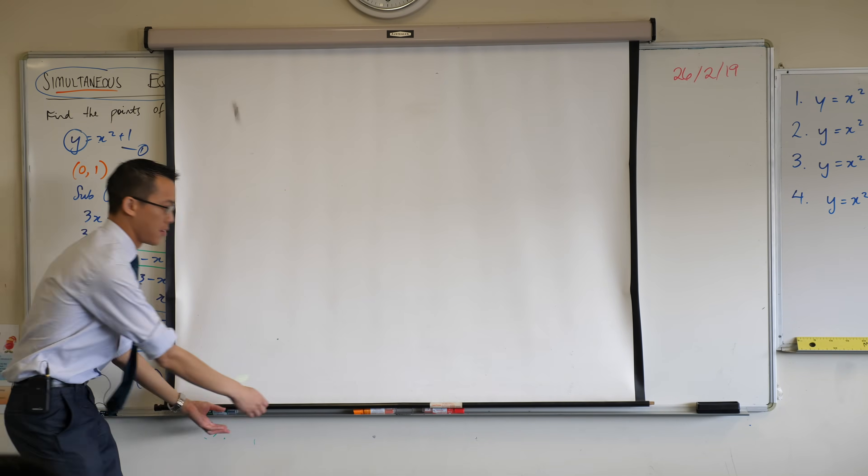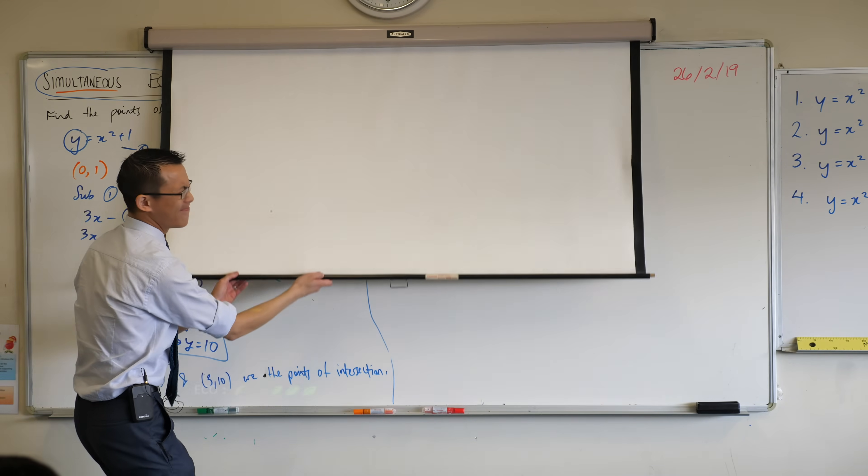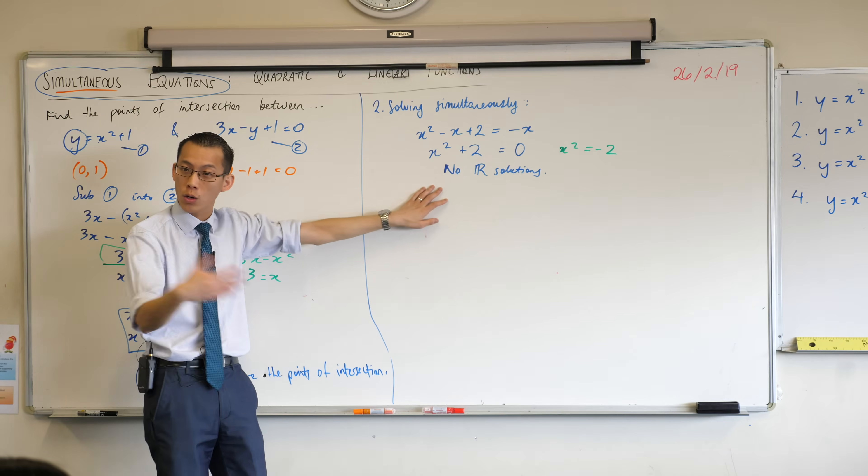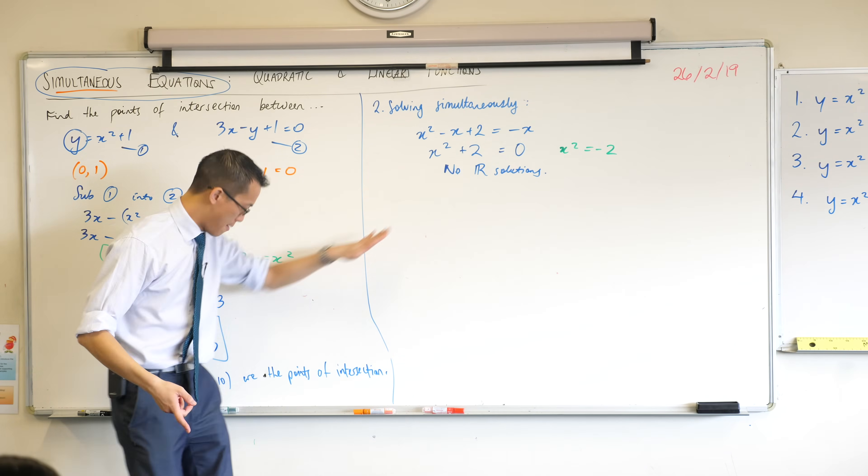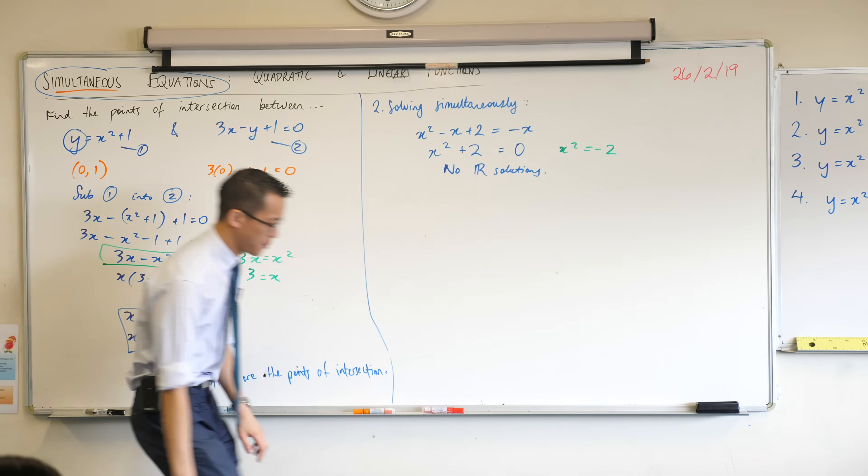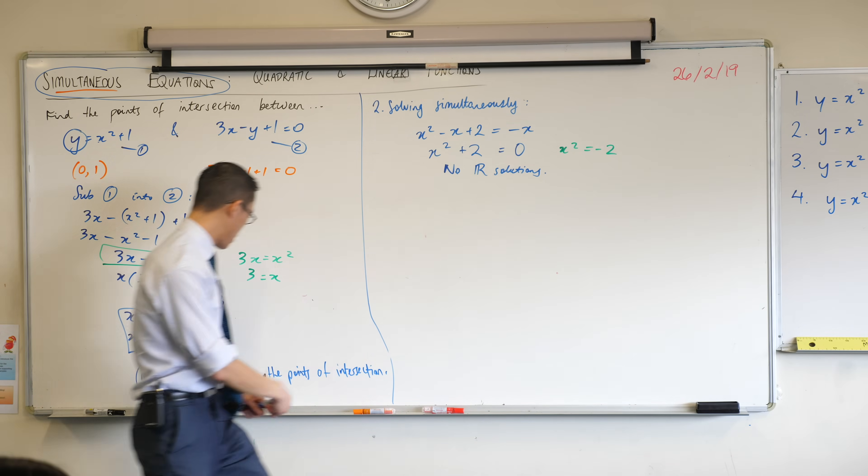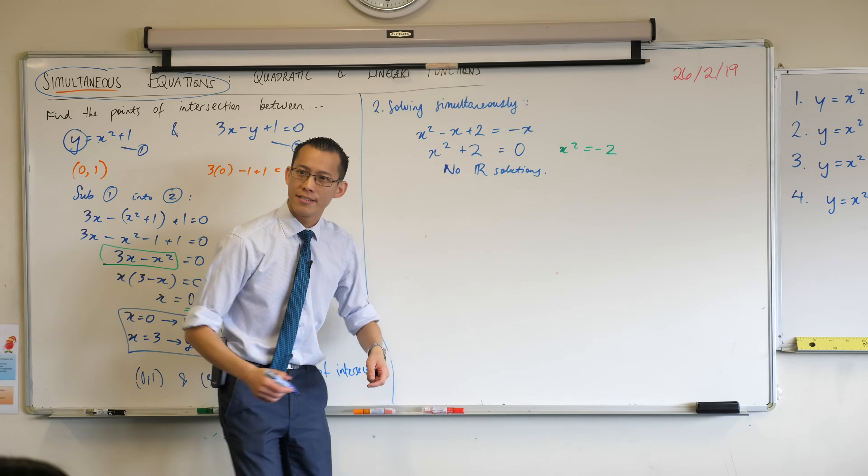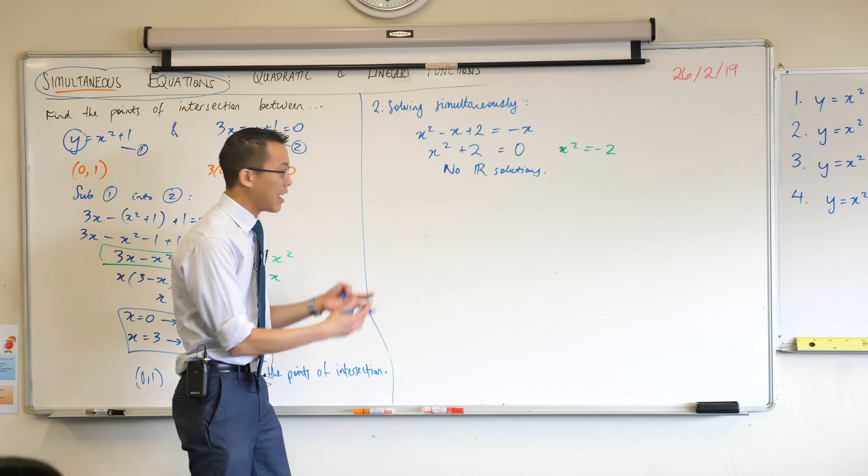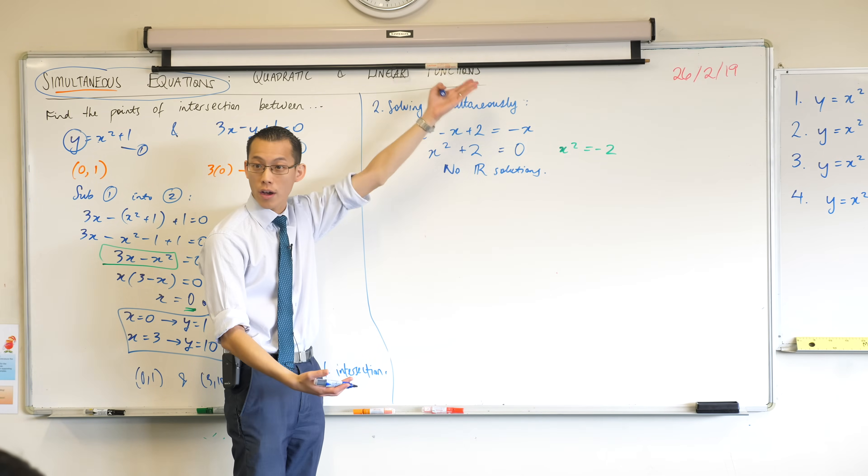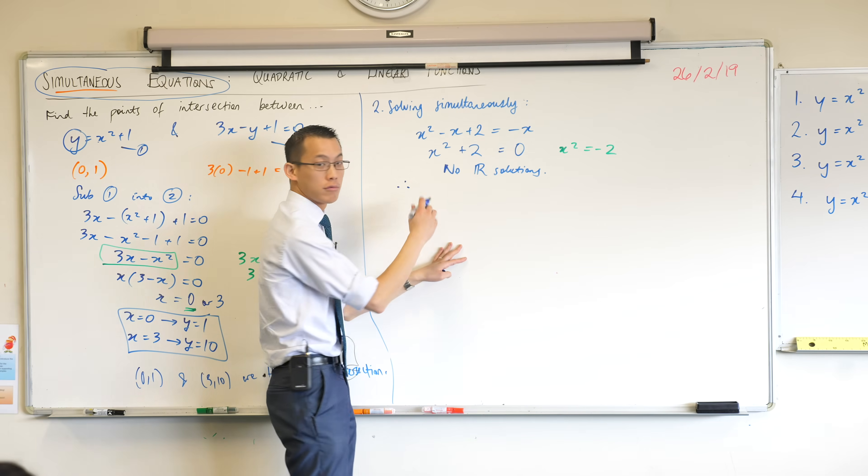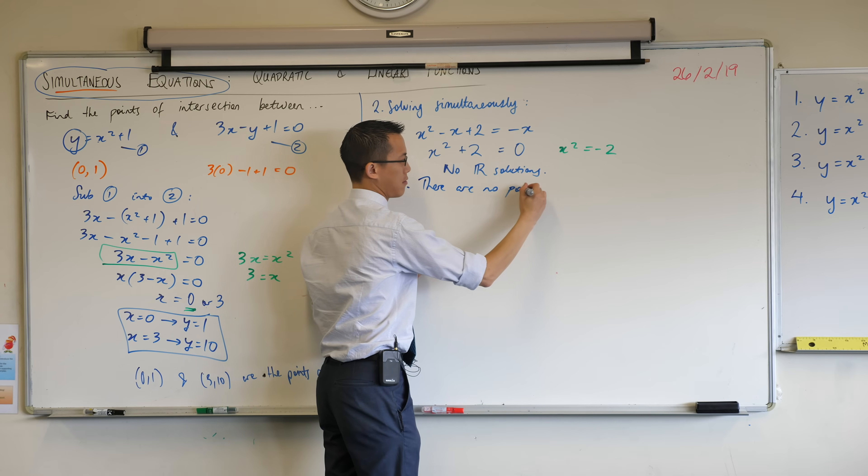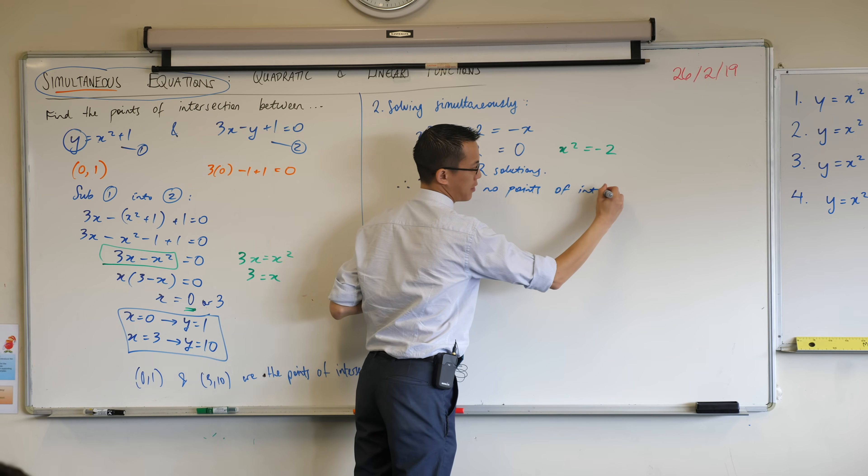So just because you didn't get any numbers at the end, that doesn't mean you can't answer the question. The answer to the question is, there are no points of intersection. Well, I've written my fancy r here, at this point, to indicate what could I do with that equation? Answer, that's as far as I could go. But now, I'm going to come back to the original question. Well, I don't have any points. So my final line will be, there are no points of intersection. Or I could say, they don't intersect. Either would be the same.